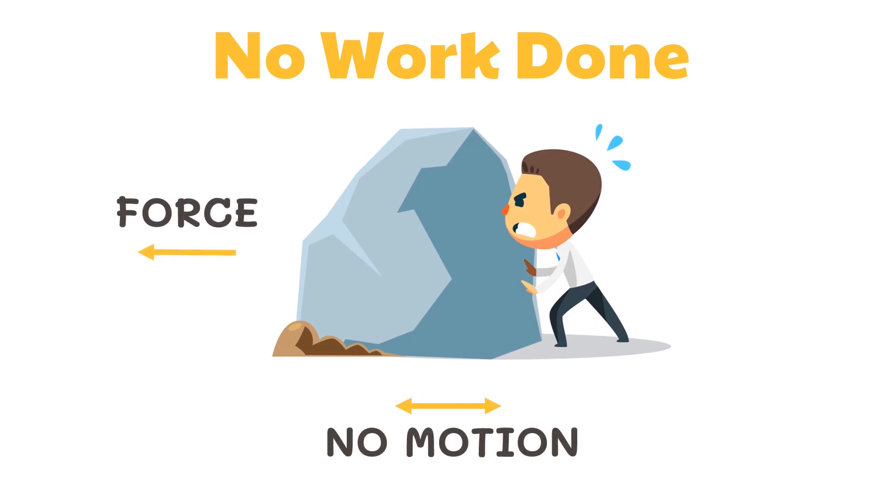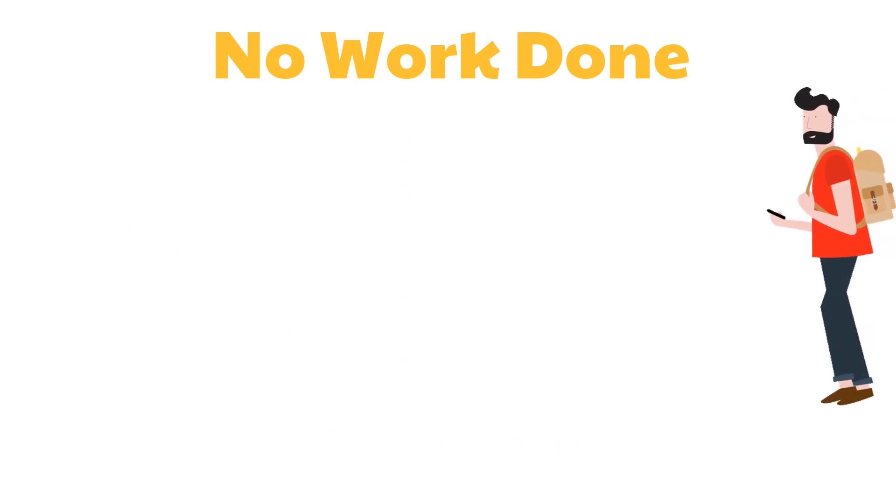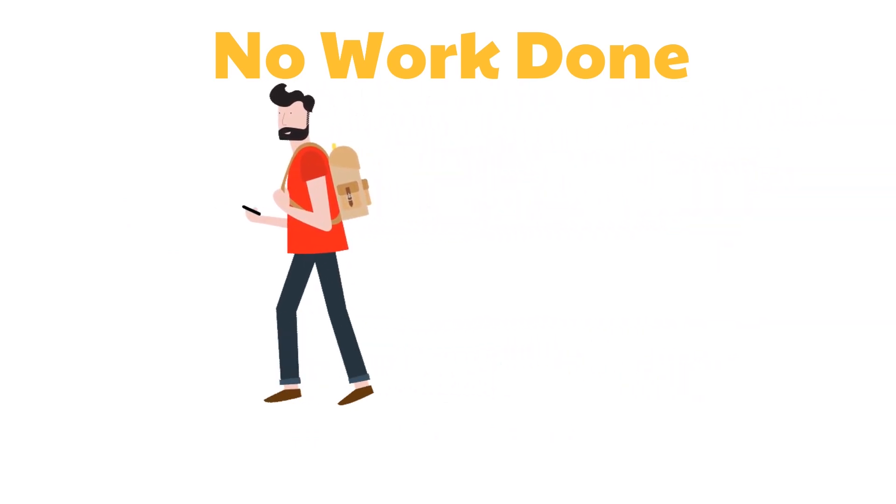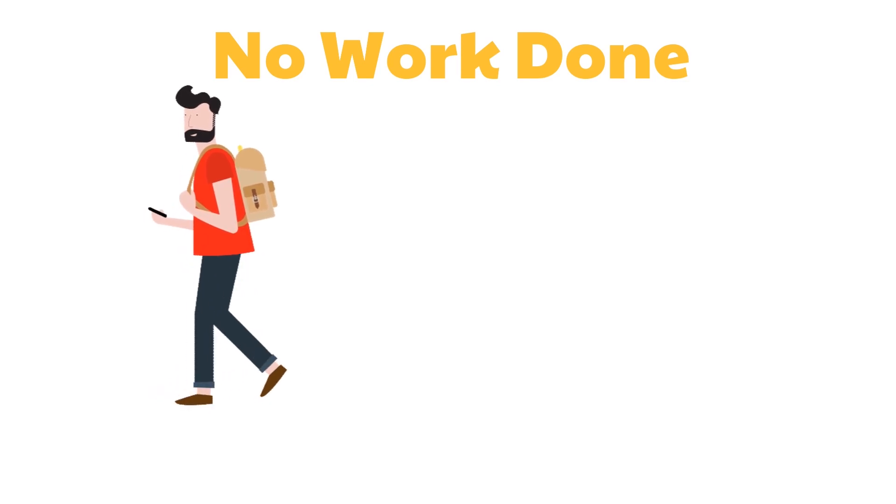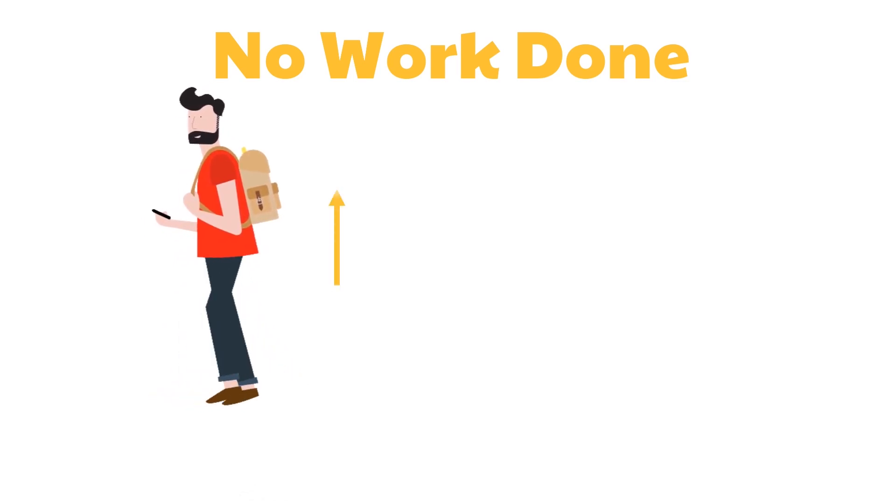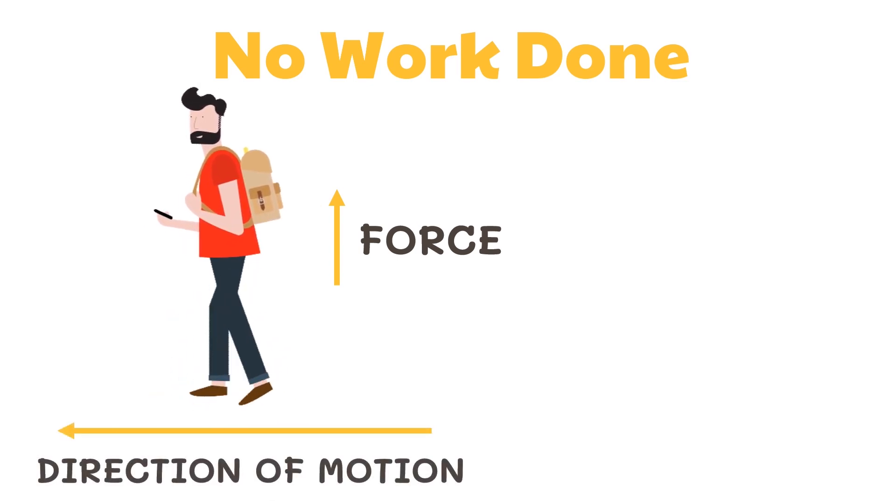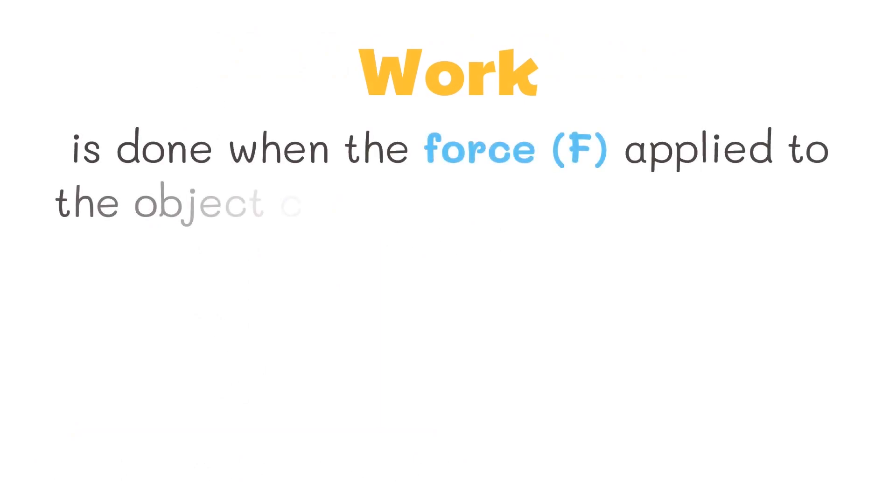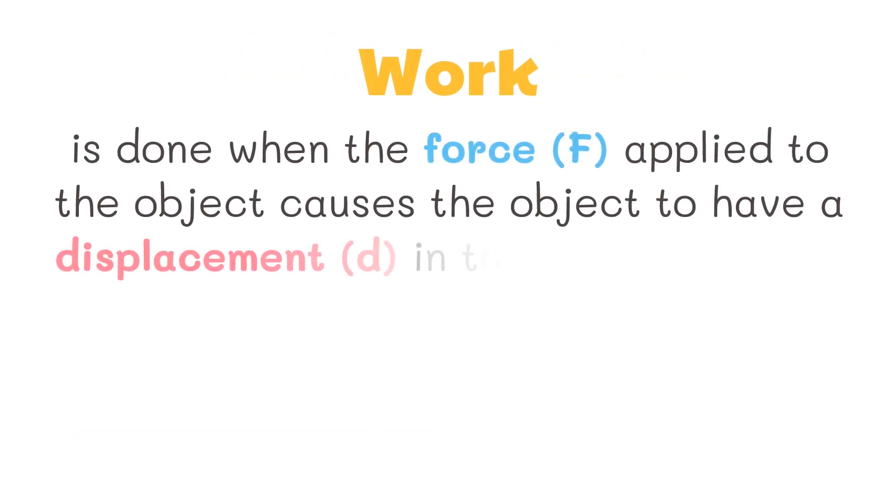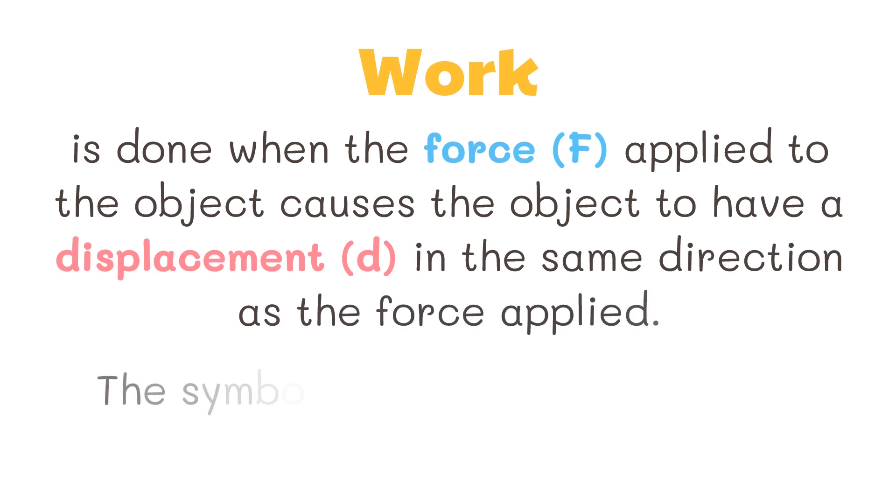No work is done if the force you exert does not make the object move. No work is also done if the object moves a distance in a direction that is not in the direction of the force applied. Take this man for example: the force he uses to carry the backpack is upwards, but he is moving in a different direction from the force applied. Work is done when the force applied to the object causes the object to have a displacement in the same direction as the force applied.